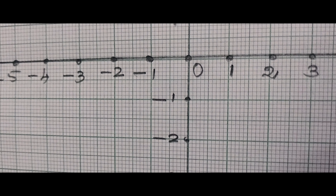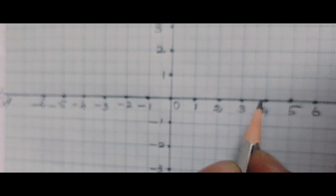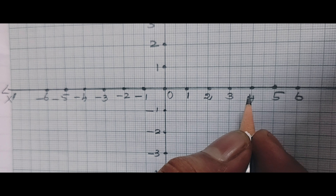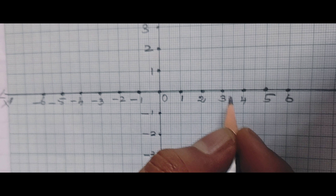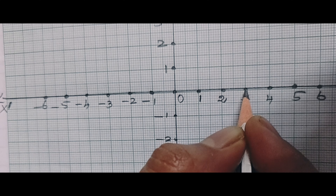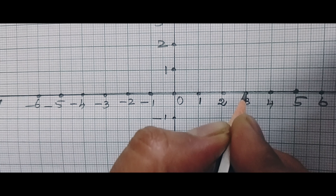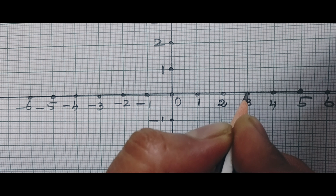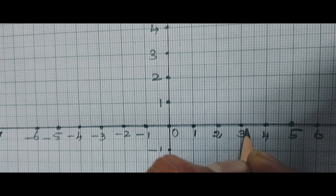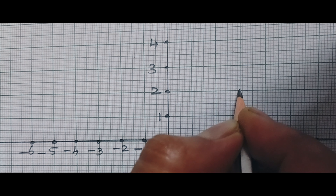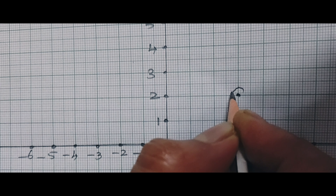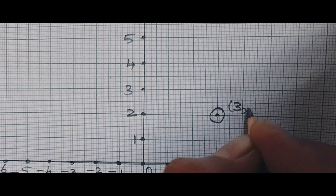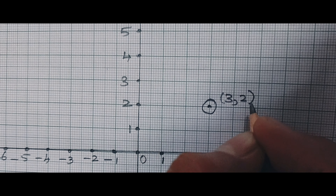I am going to plot the point P(3,2). P(3,2) means 3 is the X-axis value and 2 is the Y-axis value. So here it is 3 on X, and 2 on Y. Then you mark it with a circle and write the point. It is the ordered pair: X-axis 3, Y-axis 2.